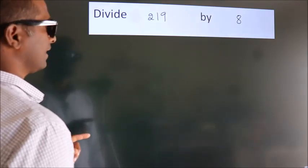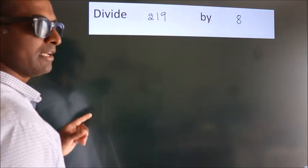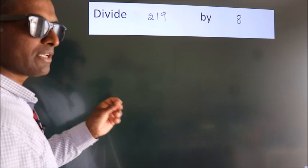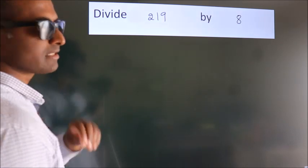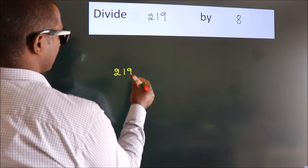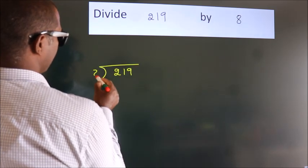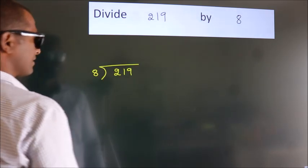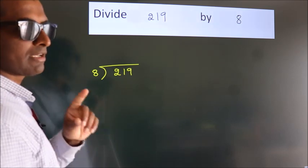Divide 219 by 8. To do this division, we should frame it in this way: 219 here, 8 here. This is your step 1.